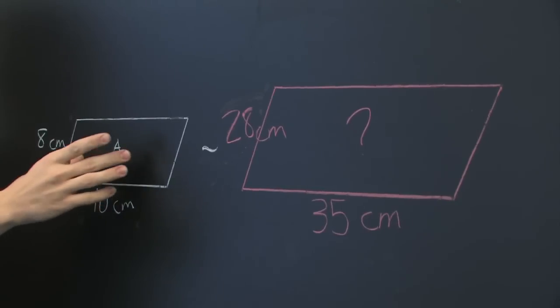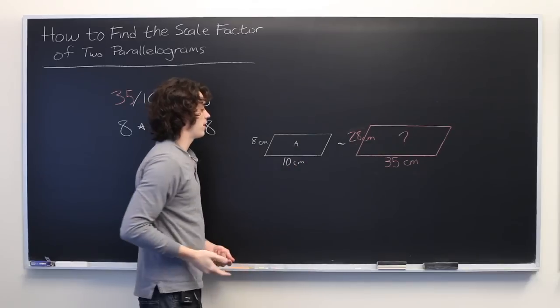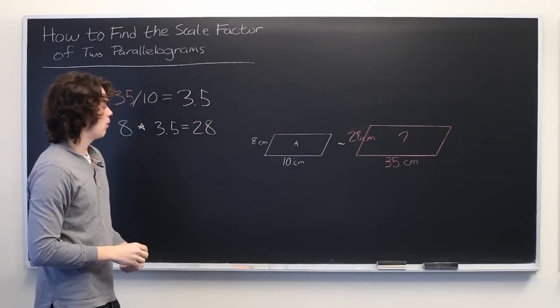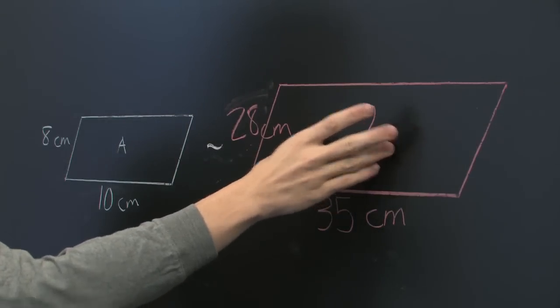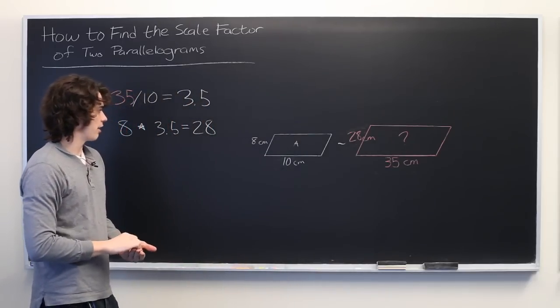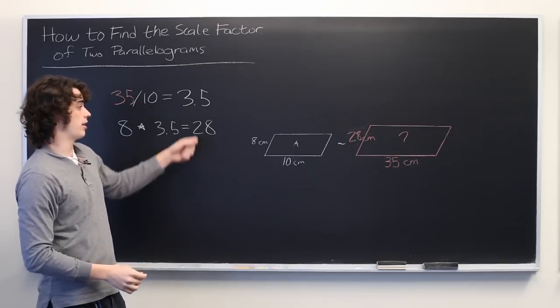So we don't know what the area of this parallelogram is, but it's represented by some quantity A. And what we want to find is the area of this parallelogram in terms of A. And you might think to yourself that the answer is just 3.5 times A, since that's the scale factor that we found.